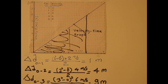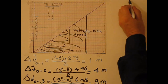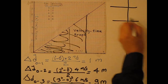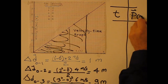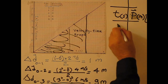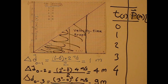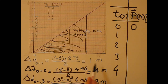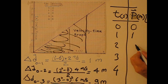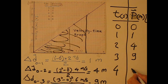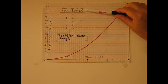Since the initial position is zero, we can build the position-time table. Time in seconds versus position in meters east. At zero seconds, position is zero. At one second, zero plus one equals one meter. At two seconds, zero plus four equals four meters. At three seconds, nine meters. At four seconds, sixteen meters east.